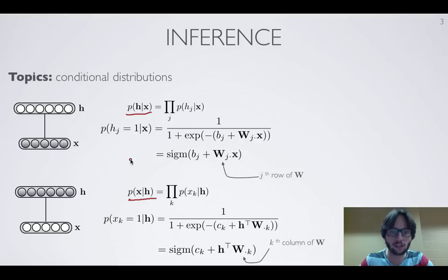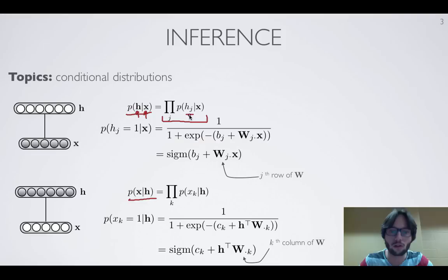The first fact to know is that the full conditional distribution over the whole vector H given the visible layer X actually factorizes. It can be written as the product of each conditional distribution of each individual hidden unit given the full vector X. In other words, all the hidden layer units are conditionally independent given the value of the visible layer X.